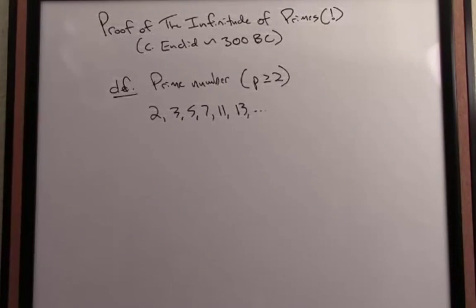So let's begin with the definition of what a prime number is. A prime number, beginning with the number 2, is an integer greater than or equal to 2, whose only whole number divisors are 1 and itself.